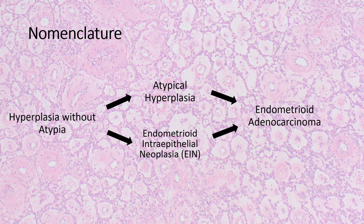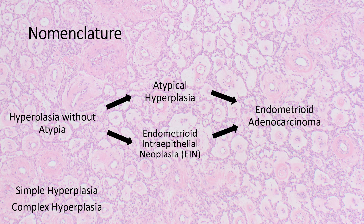Over time there have been various ways to describe events along this progression, and here I have terminology from the latest edition of the WHO, which is used in the majority of pathology departments. First you have endometrial hyperplasia without atypia, describing the effect of unopposed estrogen. Then you have the development of clonal proliferation, with two WHO-accepted terms: atypical hyperplasia and endometrioid intraepithelial neoplasia. And then you have endometrioid adenocarcinoma. Keep in mind older terms like simple or complex hyperplasia are no longer used.